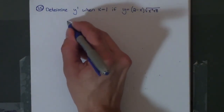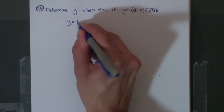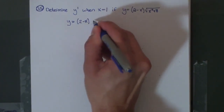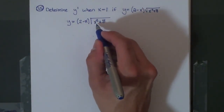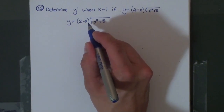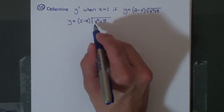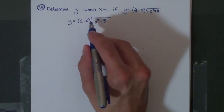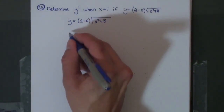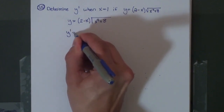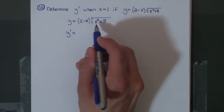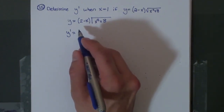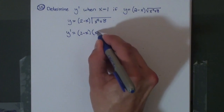The first thing we need to do is determine what the derivative is. As you notice, we have two different parts right here — this is like saying that we are taking the derivative of f of x times g of x. So we're going to have to use the product rule here. To find y prime, you're going to have to keep the first, take the derivative of the second, add it to keeping the second and taking the derivative of the first.